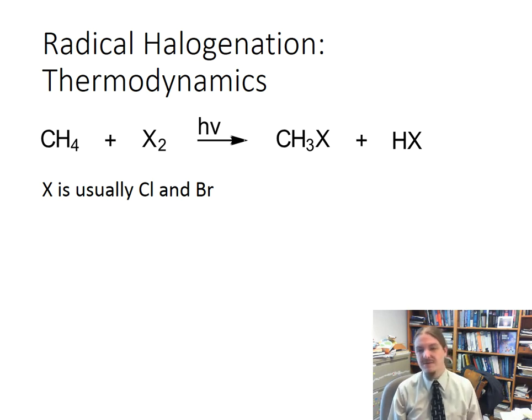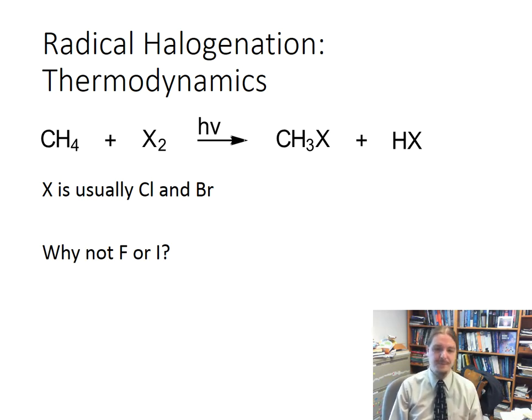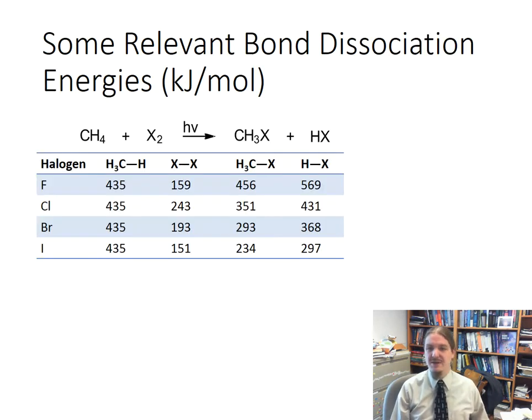And this first video in the series is going to be spent answering the question, why not fluorine or iodine? And if you've already studied the addition reactions of alkenes, you may already have a sense of why not iodine—that reactions that might work for chlorine and bromine tend to sometimes not work for iodine because they become endothermic. So let's talk about that.